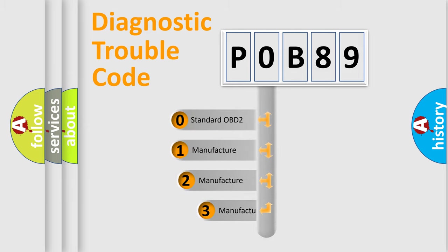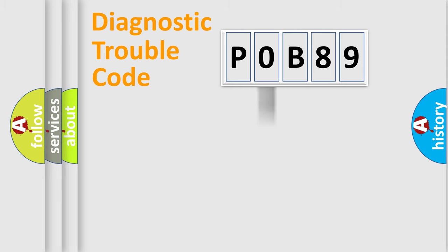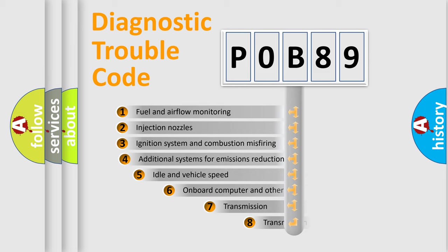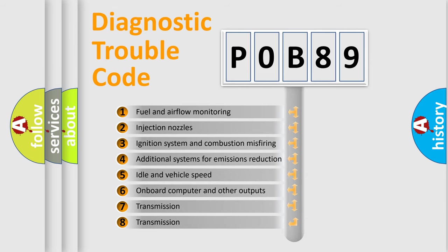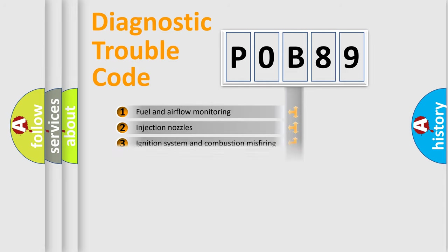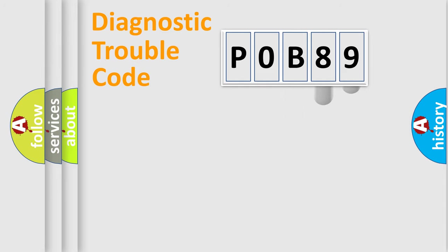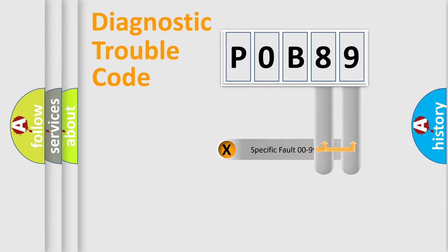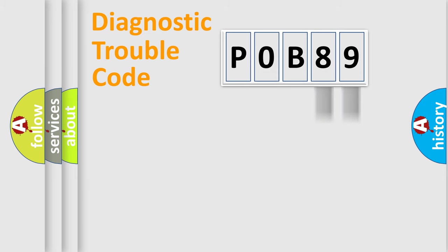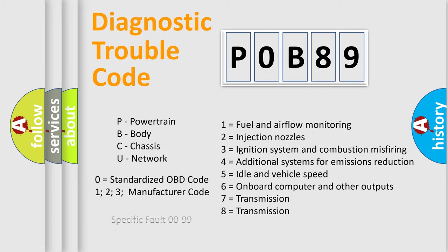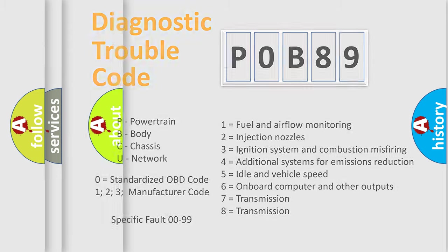If the second character is expressed as 0, it is a standardized error. In the case of numbers 1, 2, or 3, it is a more specific expression of a car-specific error. The third character specifies a subset of errors. This distribution is valid only for the standardized DTC code. Only the last two characters define the specific fault of the group, and this division is valid only if the second character code is expressed by the number 0.